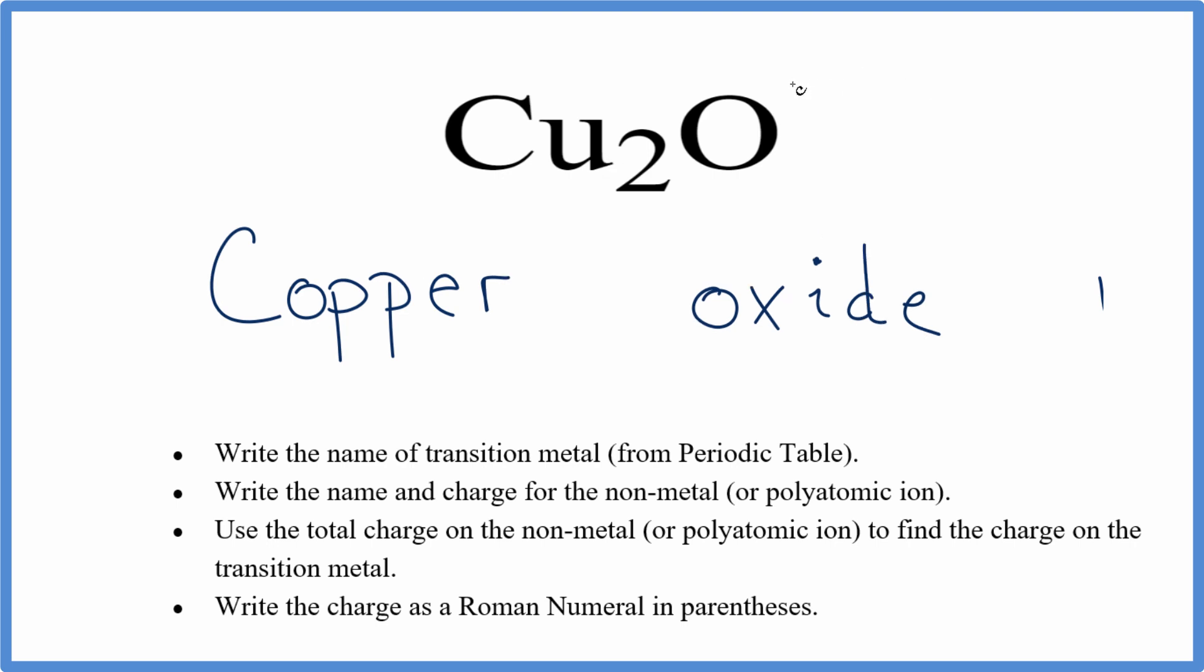To find the charge, we know the charge on oxygen is always -2. The question is, what is the charge on each copper that'll give us +2 to balance this out? If each copper has a +1 charge, 2 times +1 gives us +2, and that'll cancel it out. So copper has a charge of +1.